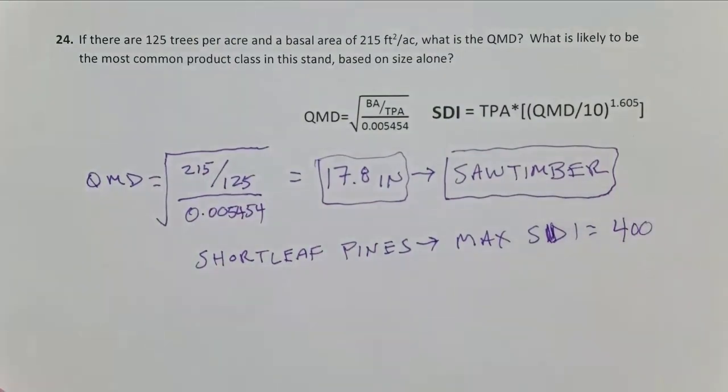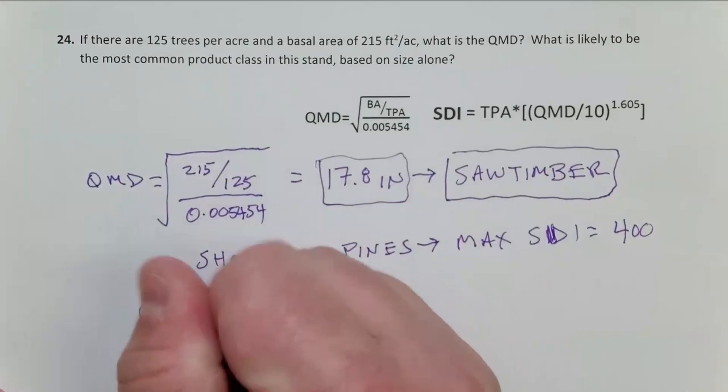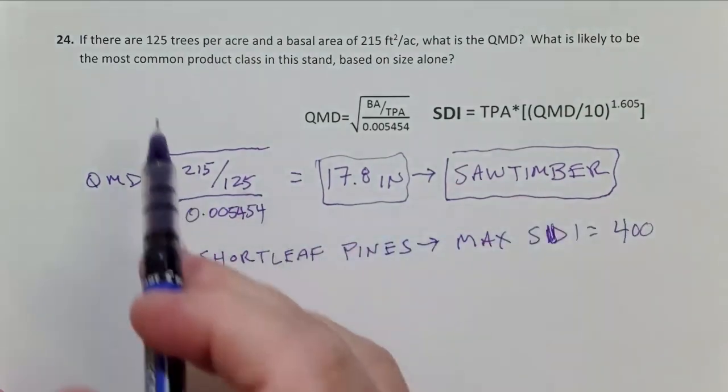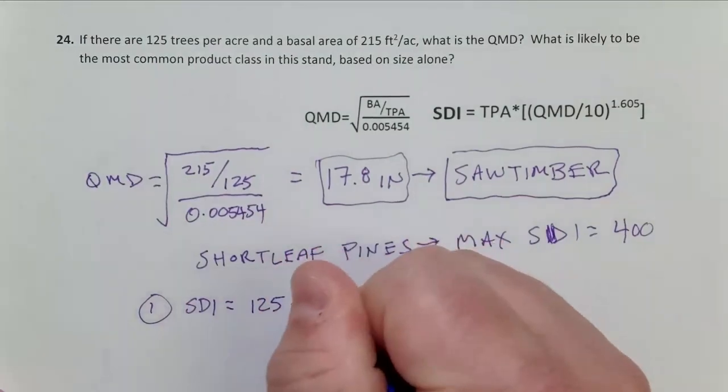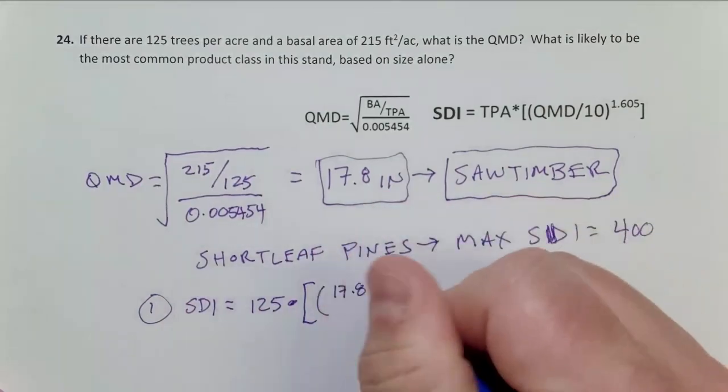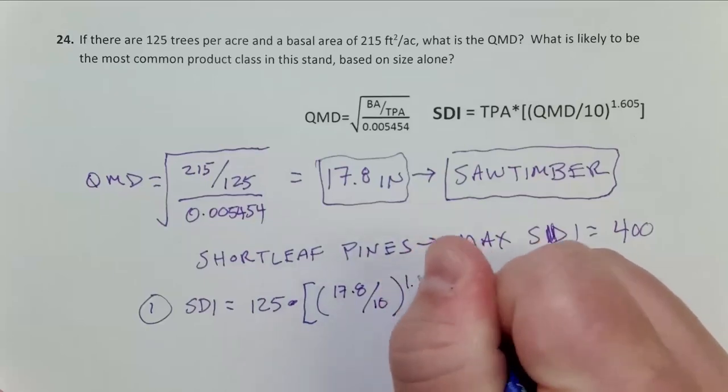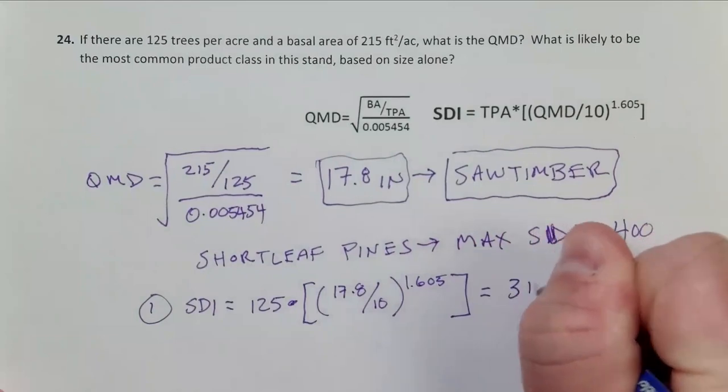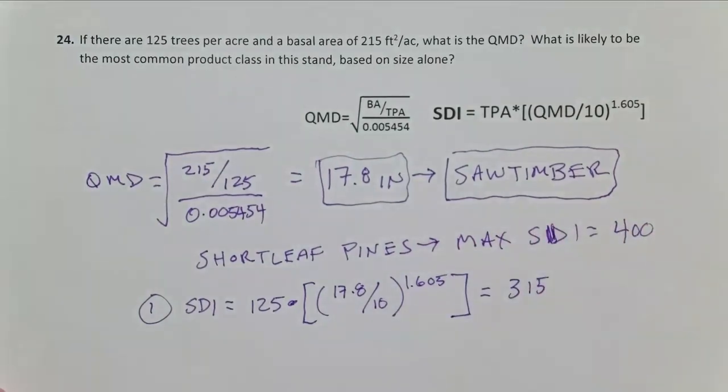So now that we have QMD, let's plug this into SDI. Step one from problem 23 that we've already done. SDI equals, how many trees per acre did I have? 125 multiplied by 17.8, that's my QMD which I calculated from basal area, divided by 10 raised to the 1.605 power. So again, order of operations. Divide 17.8 by 10, get 1.78, then raise 1.78 to the 1.605 power. Once you have that calculated, then multiply it by 125. And this gives me an SDI of 315, 10 inch trees per acre.